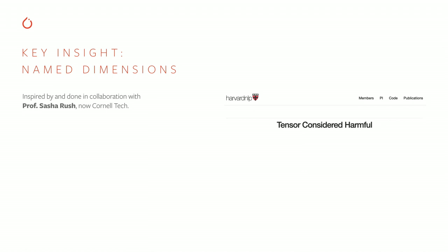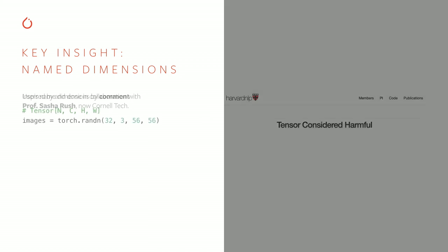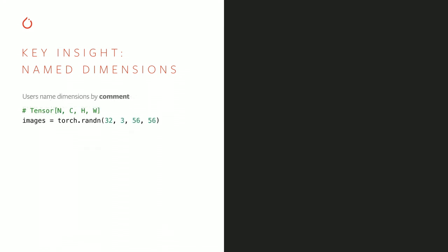This idea was proposed in a blog called 'Tensor Considered Harmful' by Professor Sasha Rush, who's now at Cornell Tech, and we worked closely with Professor Rush on developing this named tensor feature. In code today, you'll often see tensor dimensions being named by comment. You set up a tensor and name it NCHW, then access dimensions by position. Here we are summing over the channels, and I know that because I can refer back to the comment. This is trivial in a two-line example, but in a real program with complex shape manipulation operations, this can be very onerous to track.